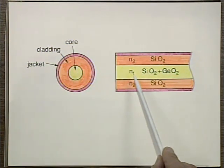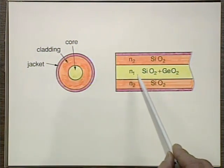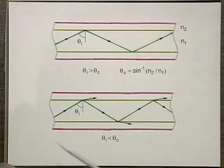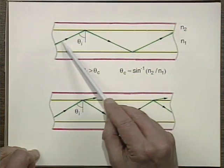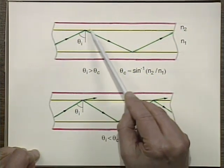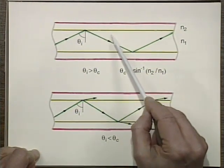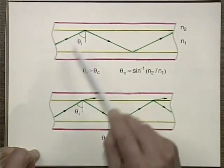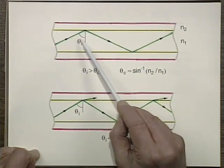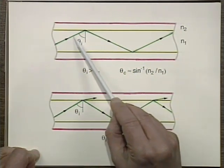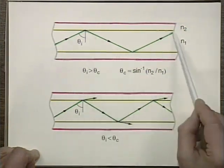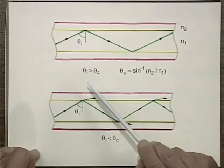So the key thing here is total internal reflection. The propagation of light in fibers is based on total internal reflection. Here's a ray of light hitting the interface between N1 and N2 — between the core and the cladding. If this incidence angle is bigger than the critical angle, then the light will be reflected and bounce around until it comes out the other end.